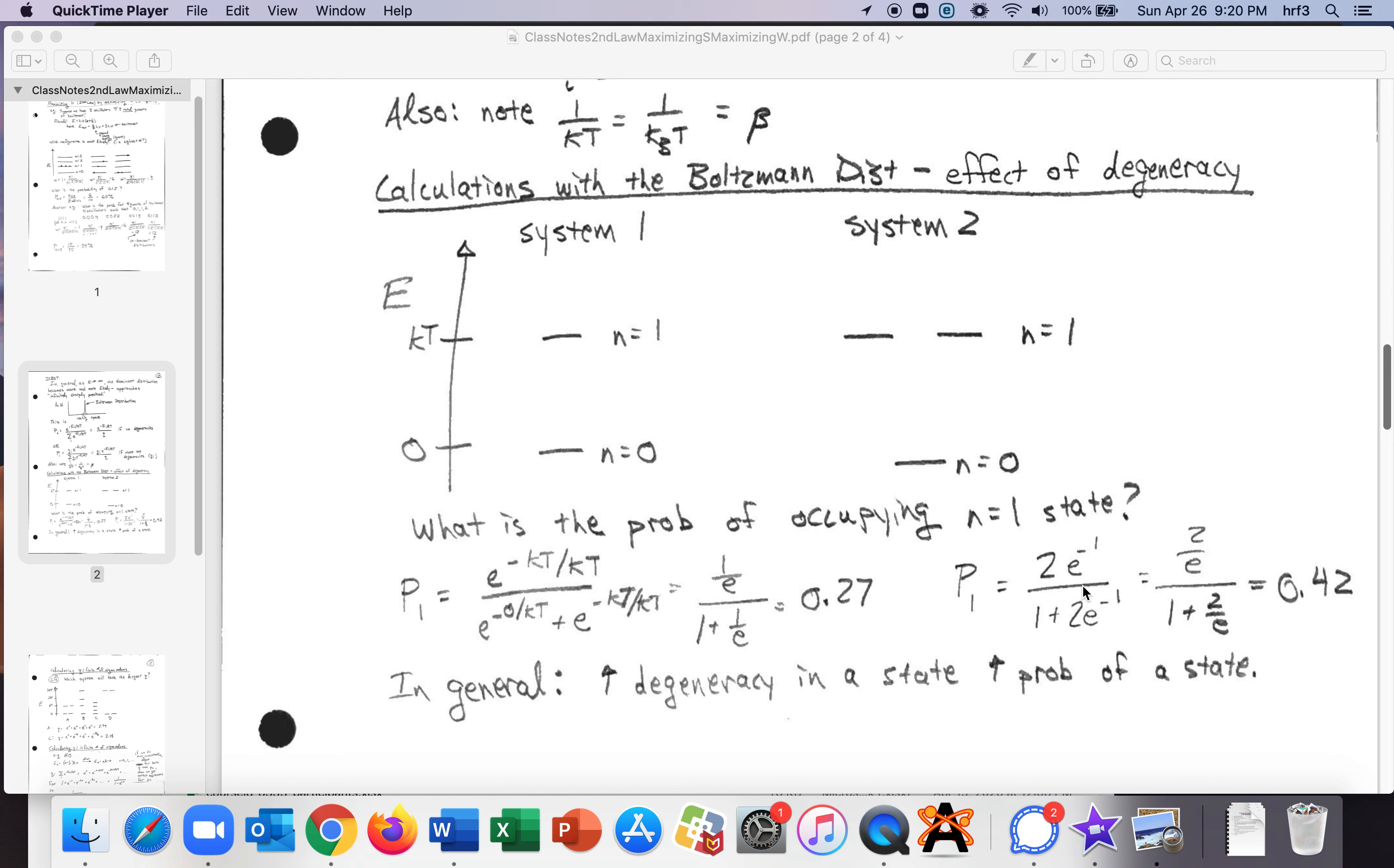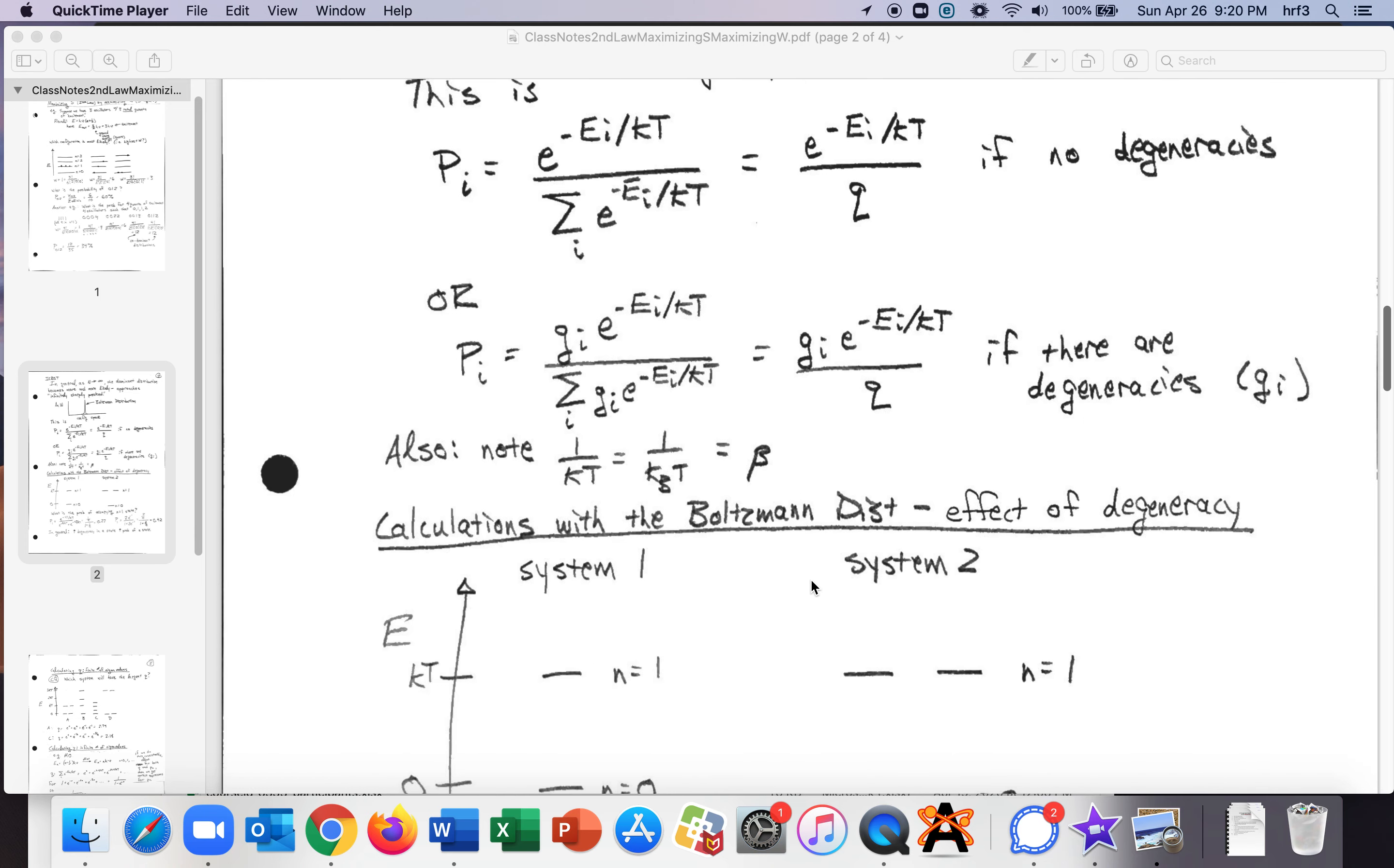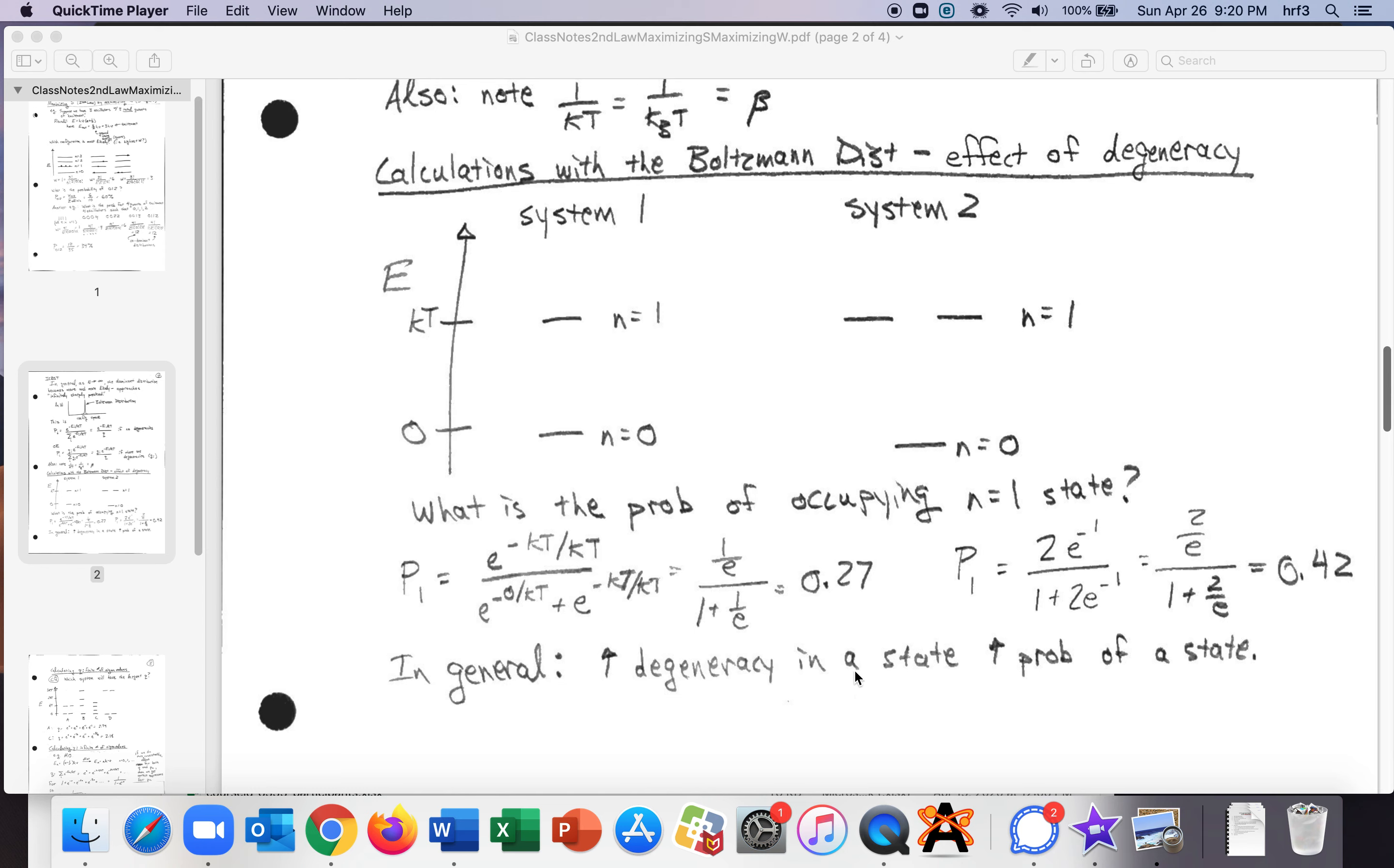If you're in system two then you got to put those gi's in there as appropriate so the excited state has a degeneracy of two so you got a two there and then one plus two and you end up with 0.42. So in general an increase in degeneracy in the state increase the probability of that state and maybe that's intuitive right now if you have a whole bunch of degenerate states it's more likely that a particle is going to end up in them.